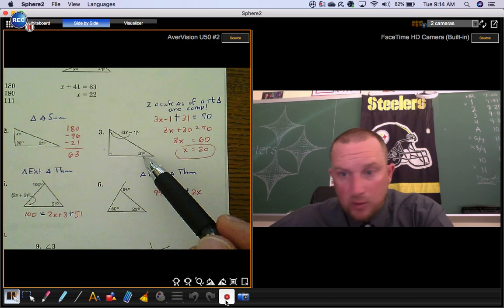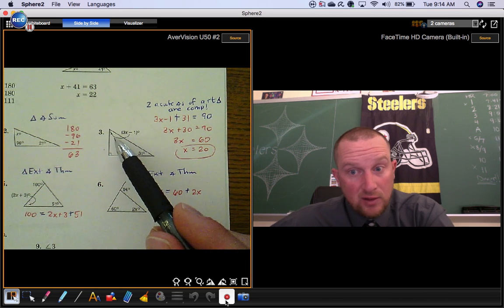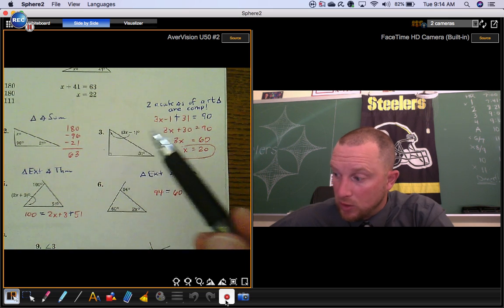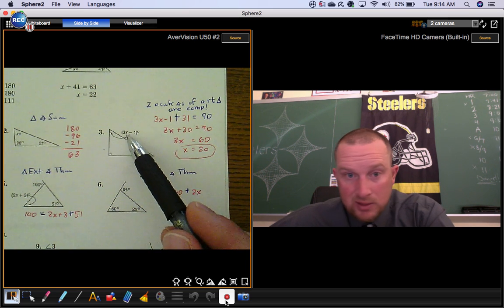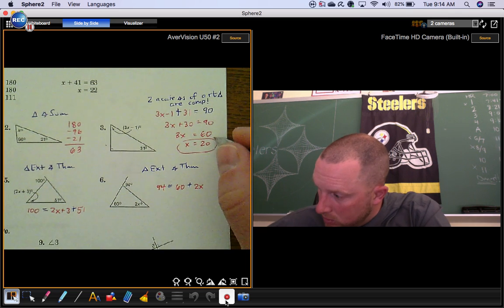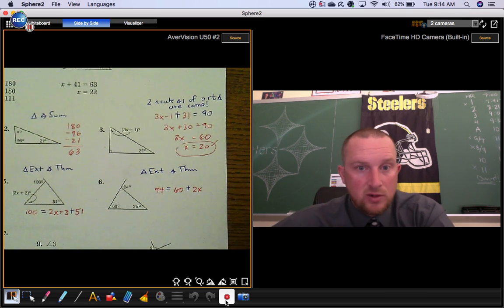If that angle's 31 degrees, this one better be 59 degrees—that's just the way the math works out. Now let's make sure: 3 times 20 is 60, minus 1 is 59, so you know that that answer is correct.